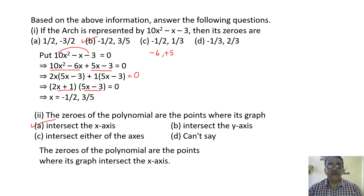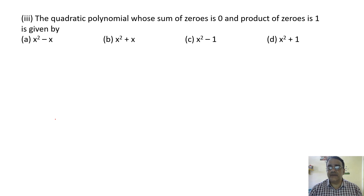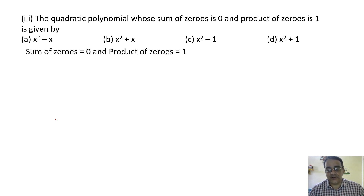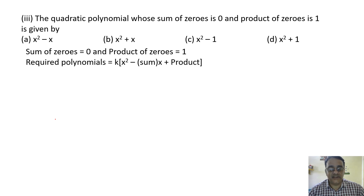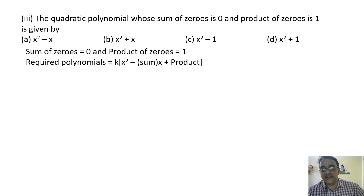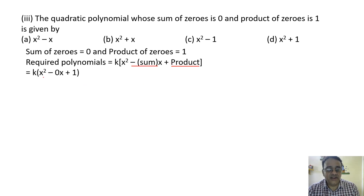The quadratic polynomial whose sum of zeros is zero and product of zeros is one is given by the formula x squared minus sum of zeros into x plus product of zeros. Substituting sum equals zero and product equals one gives x squared plus 1. If k equals 1, the correct option is option D.